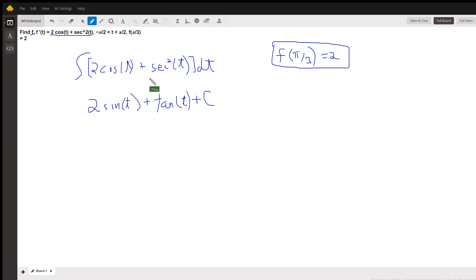There's the general antiderivative for this function right here. This condition allows us to replace C with a constant. So this means when we put π over 3 in for t, we get an answer of 2. So I'll go to red: 2 sine of π over 3 plus tangent of π over 3 plus C gives us an answer of 2.